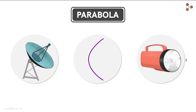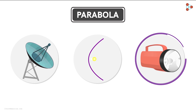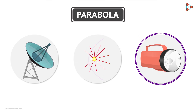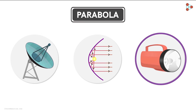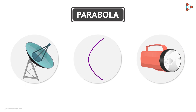For example, in the case of a torch, a bulb is placed at the focus of the parabolic mirror. We know the light emitted by the bulb spreads in all directions, but due to the parabolic mirror, the light emitted in this direction is reflected in the forward direction like this. So we see that a parabola is a U-shaped curve related to which there is a special point called its focus.